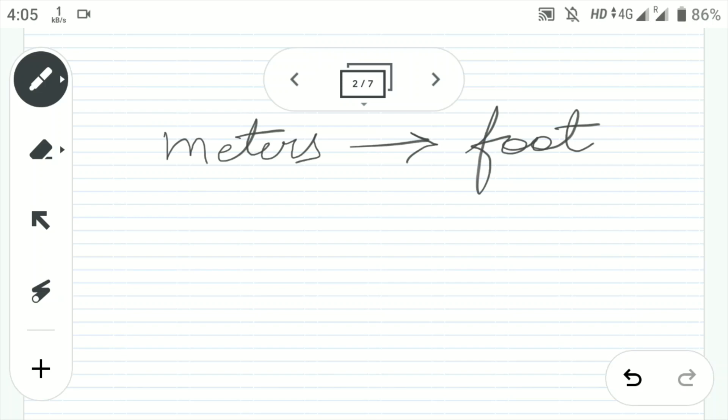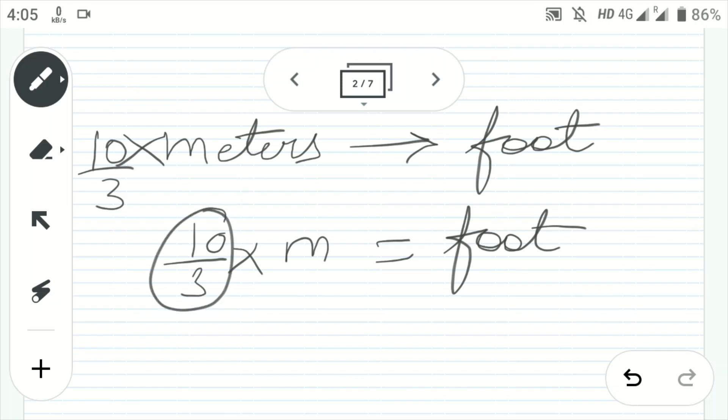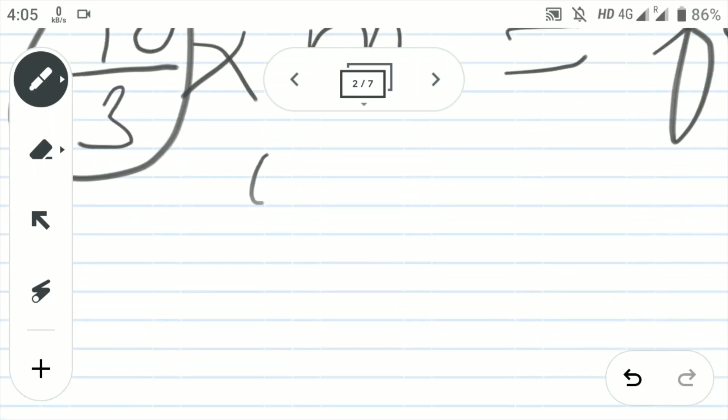So today, we will learn how to solve them, how to get the correct answer and how to fetch the good marks. So to convert meter into foot, you just multiply meter value with 10 by 3. Now, how is this 10 by 3?